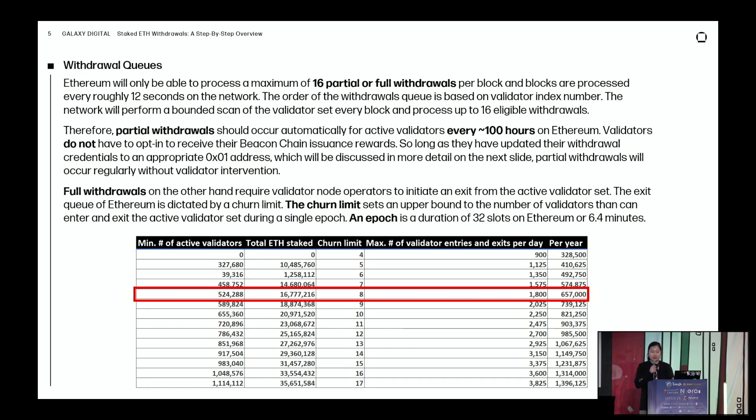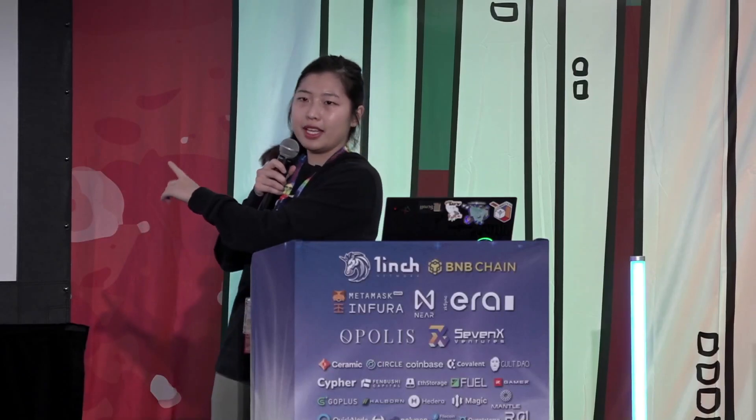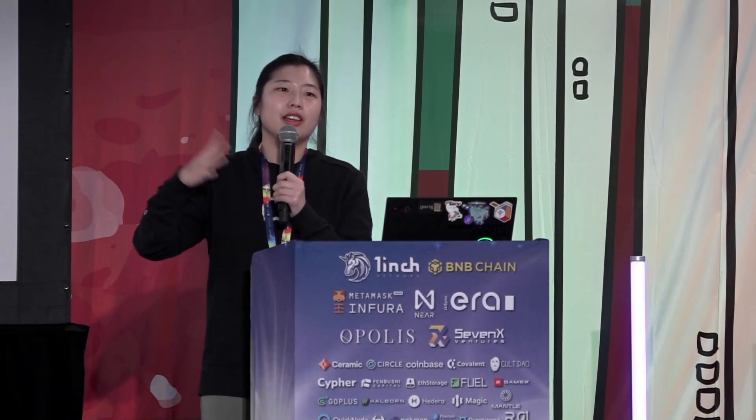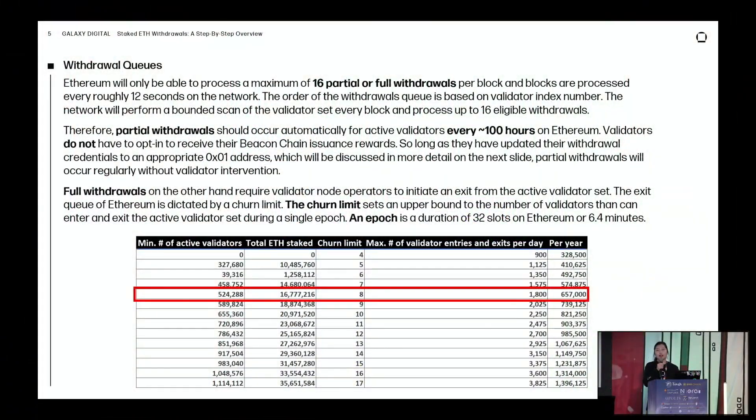To put the churn limit in perspective: if 1,000 validators are all trying to exit at Shanghai at the same time — unstaking their full 32 ETH balance — that would take about 13.3 hours to run through the exit queue. After that, you'd still have to run through the withdrawal queue, which is about four to five days. The math for the churn limit is: number of validators trying to exit divided by the churn limit, multiplied by the epoch time of 6.4 minutes. So yes, full withdrawals take longer than partial withdrawals.